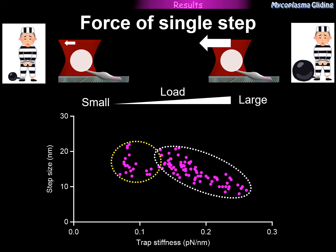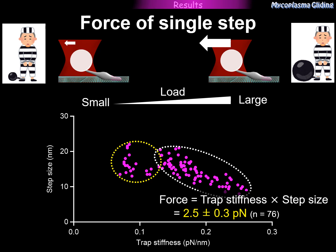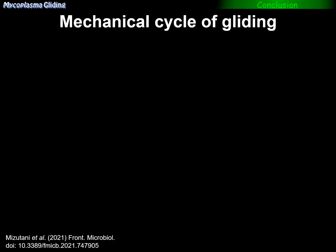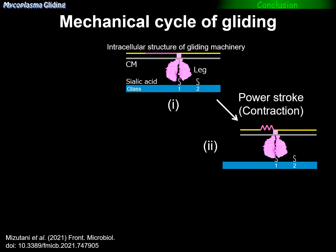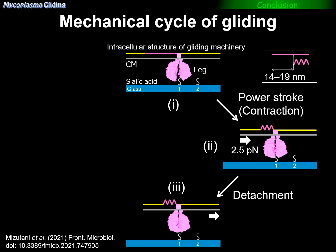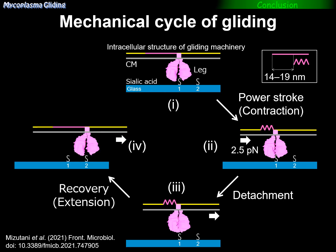Next, we calculated the force exerted in a single step. Force should be calculated under sufficient load conditions — in the range marked by a white circle. The average force of 76 steps was 2.5 piconewtons. Finally, we updated the mechanical cycle of pneumoniae gliding. The legs bind to sialic acid on the glass, then pull the cell body with 2.5 pN of force, moving about 14 to 19 nm forward. Then the legs detach from the sialic acid, a conformational change is recovered, and the legs can bind to the next sialic acid. By repeating this cycle across many legs, the cell glides on solid surfaces.